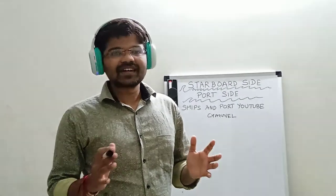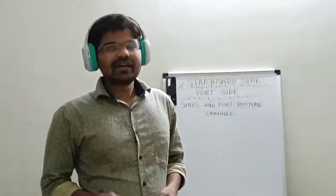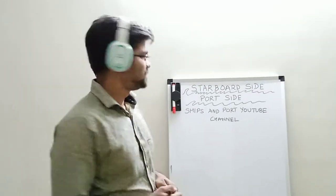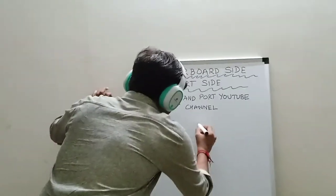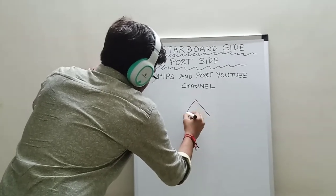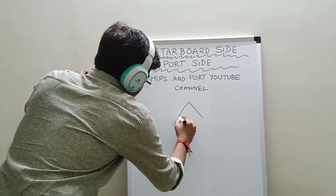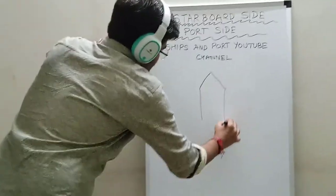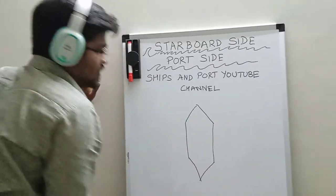So I will start explaining by giving the figure. Suppose this is the forward part of the ship and this is the back side of the ship.